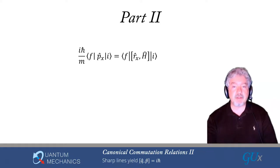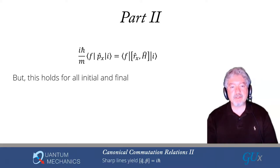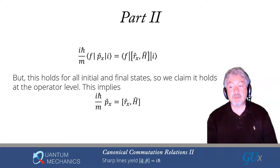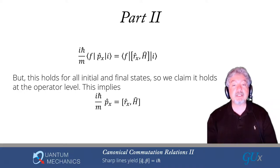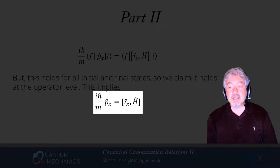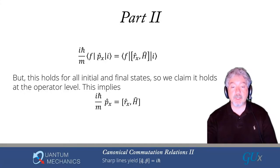Our next step is to recognize that this holds for any initial and final state. We used no properties ultimately about those specific states, so we can drop the states and say this holds at the operator level. That tells us that i h-bar over m times the momentum operator equals the commutator of Rx with the Hamiltonian — this is called the equation of motion.